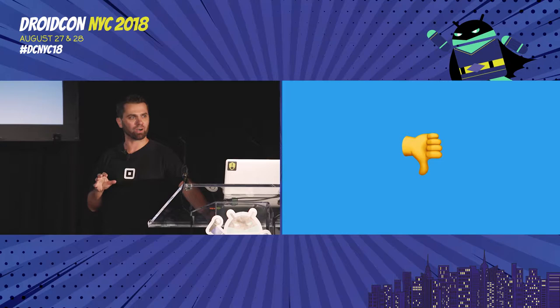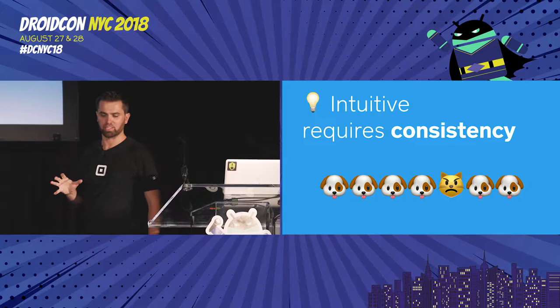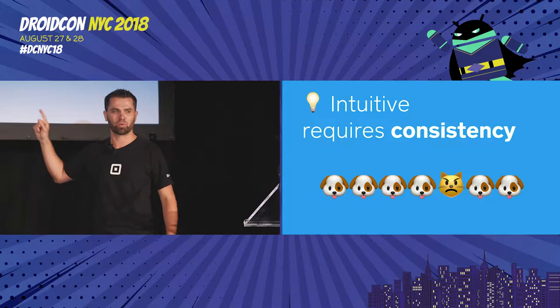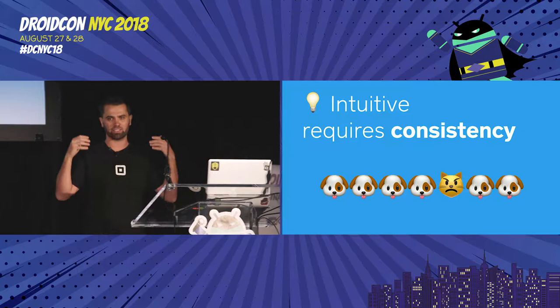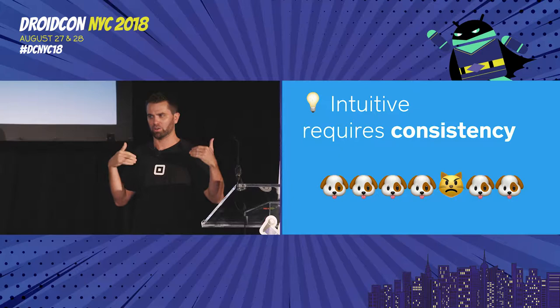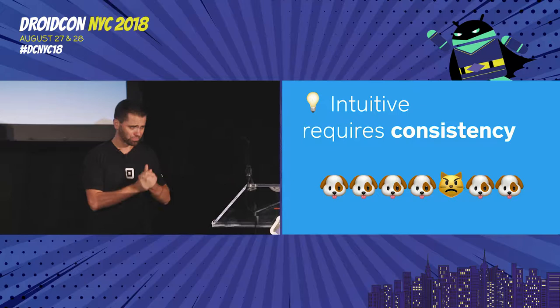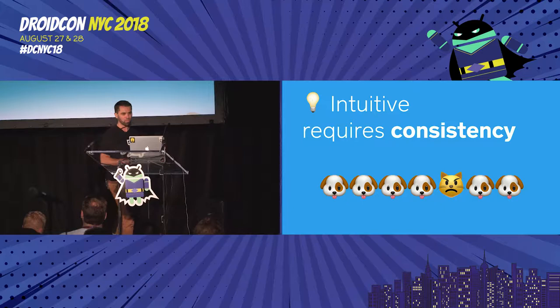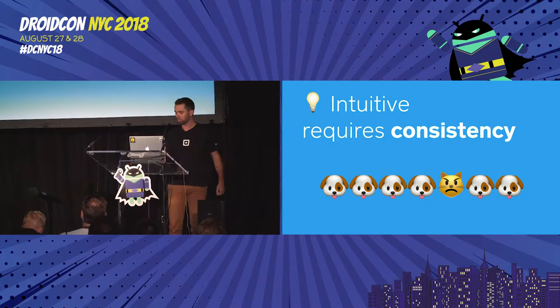One of the key requirements of an intuitive API is consistency. Humans are pattern matchers — we're really good at detecting differences, like immediately noticing a cat among dogs. That's where our brain goes on automatic mode, and that's where intuition comes in. Consistency allows you to pattern-match, and you kind of know how to do things automatically. The idea is: once I've learned a part of the system, I can figure out the rest because it's probably all the same.